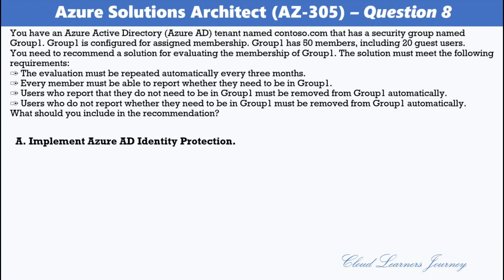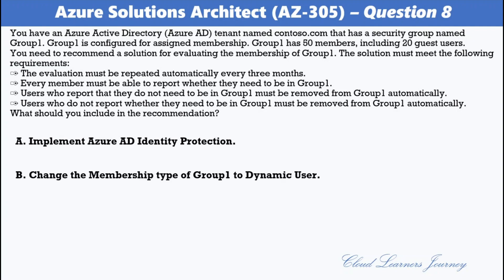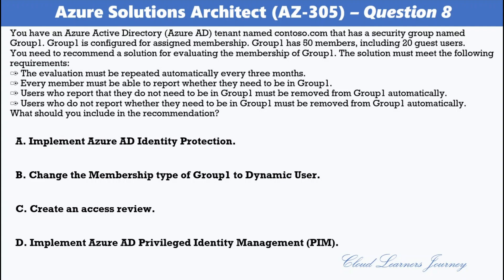Options are: A. Implement Azure AD Identity Protection; B. Change the membership type of Group1 to Dynamic User; C. Create an Access Review; D. Implement Azure AD Privileged Identity Management. The correct option is C. Create an Access Review. An Access Review is an Azure AD feature that enables administrators to review group memberships and application assignments, and allows group members to confirm whether they still require access.